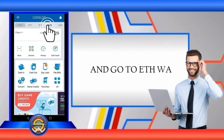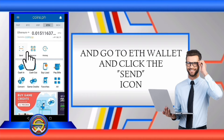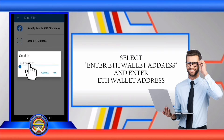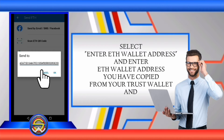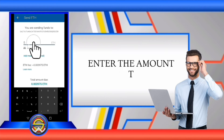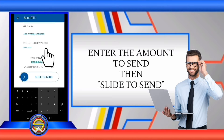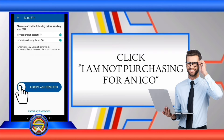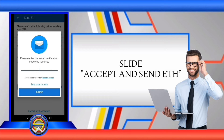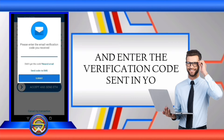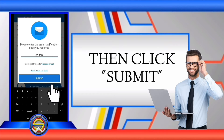Go to your Ethereum wallet and click the send icon. Select 'Enter Ethereum wallet address' and enter the Ethereum wallet address you copied from your Trust Wallet, then click OK. Enter the amount to send, slide to send, and click 'I'm not purchasing for an ICO.' Slide to accept and send Ethereum, then enter the verification code sent to your email and click submit.